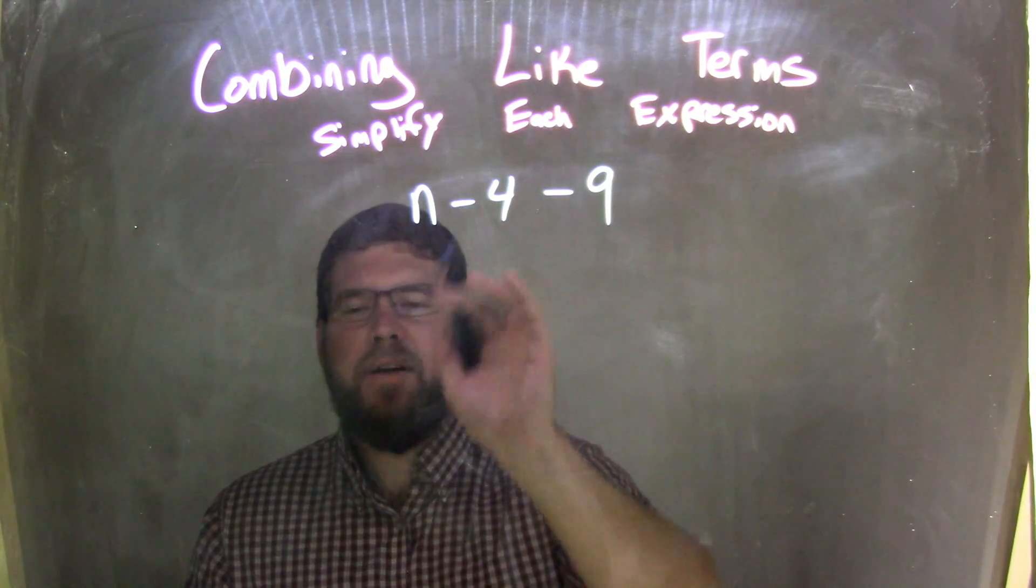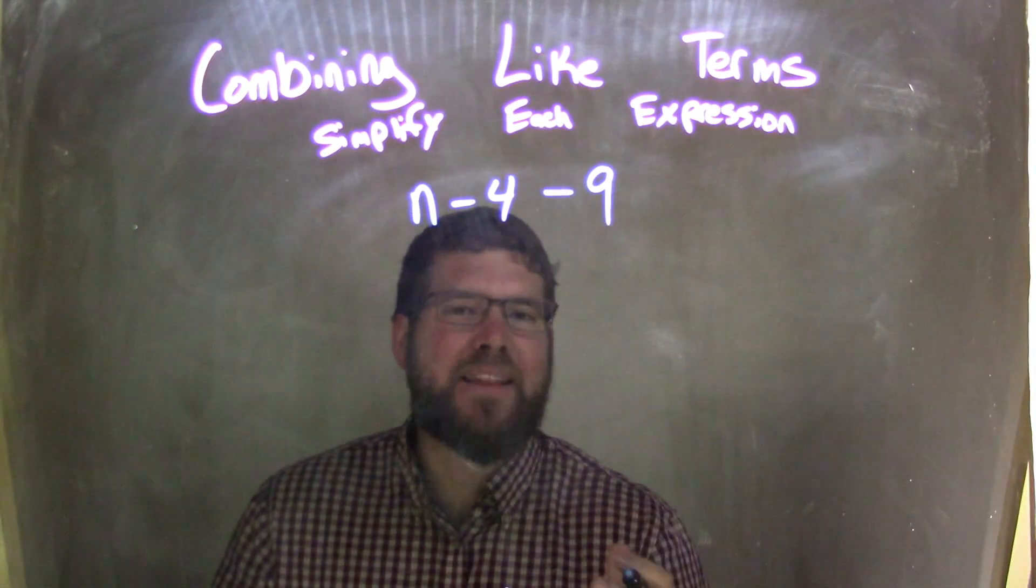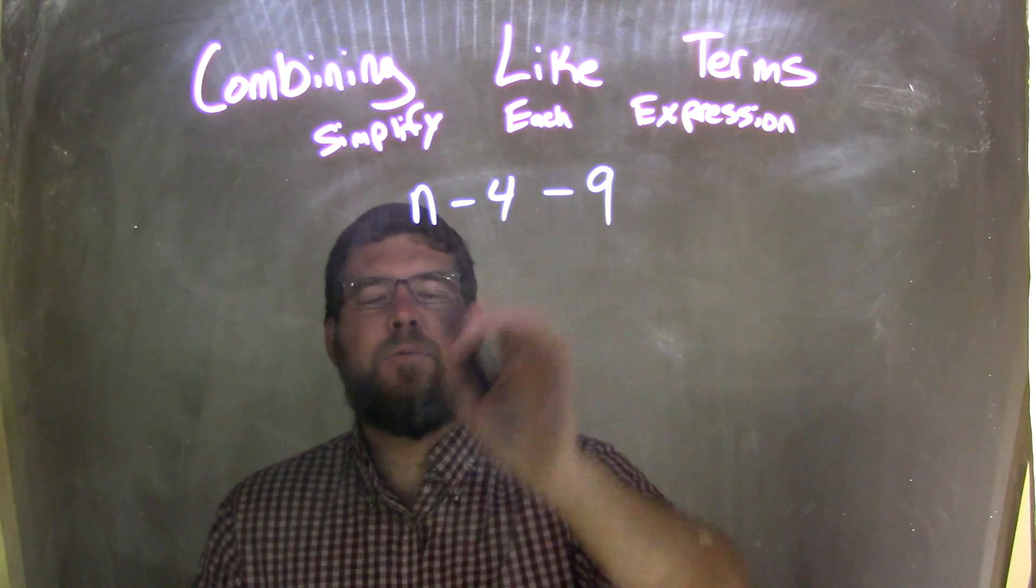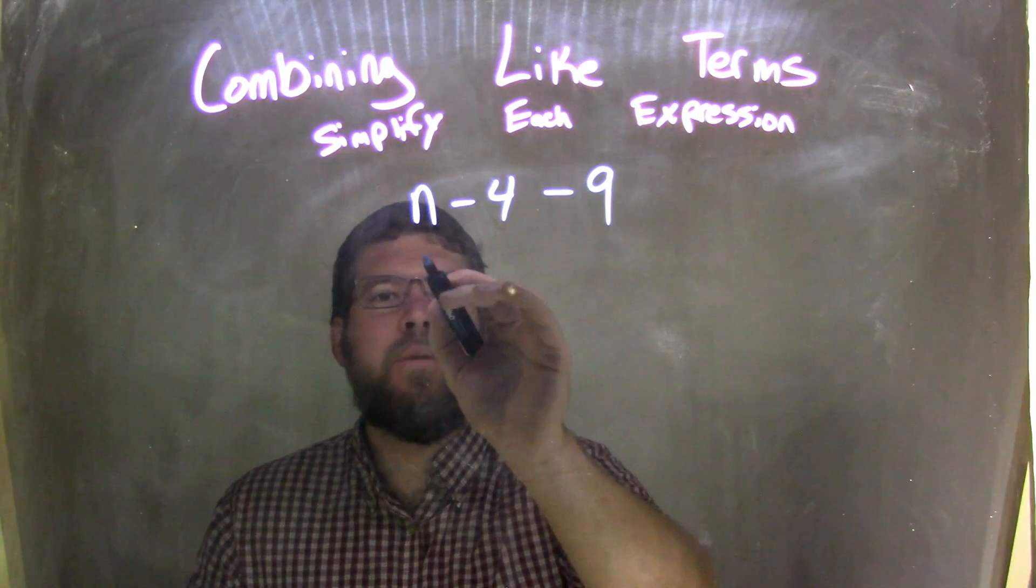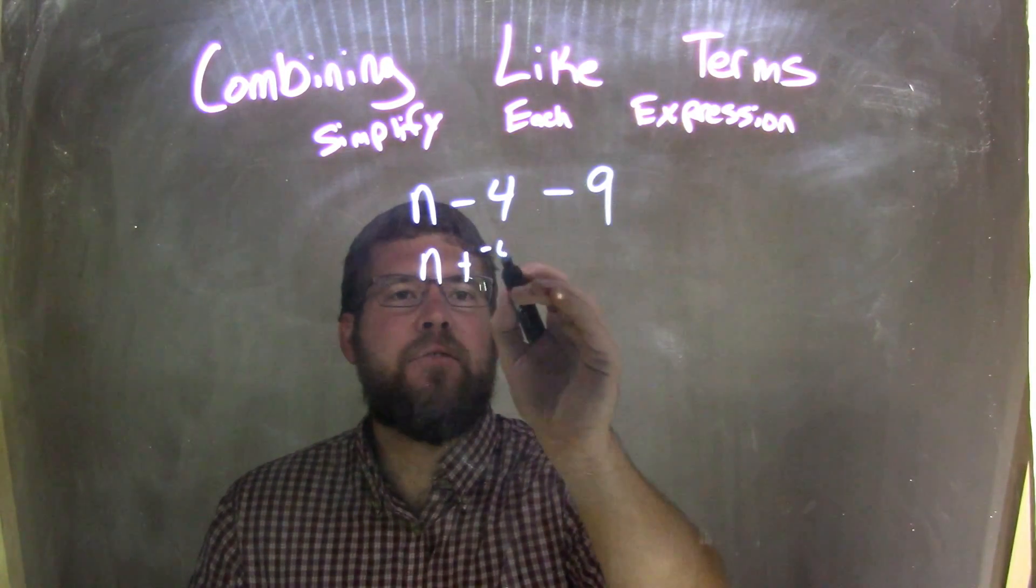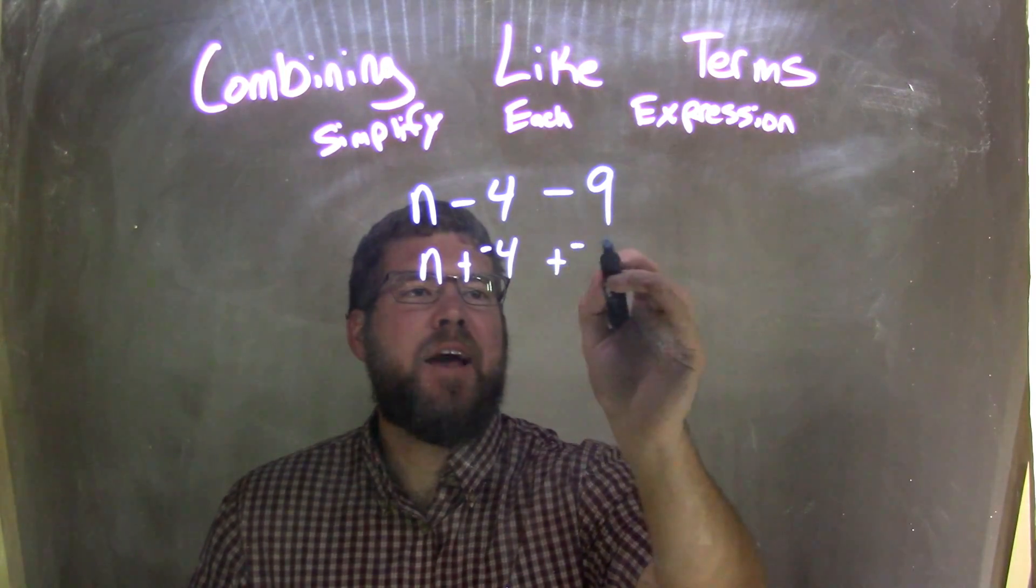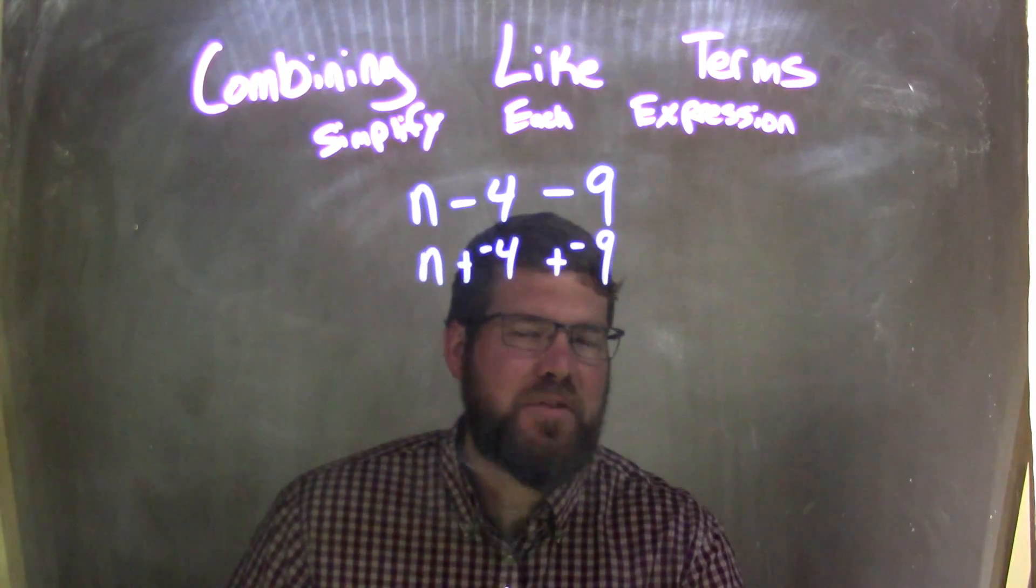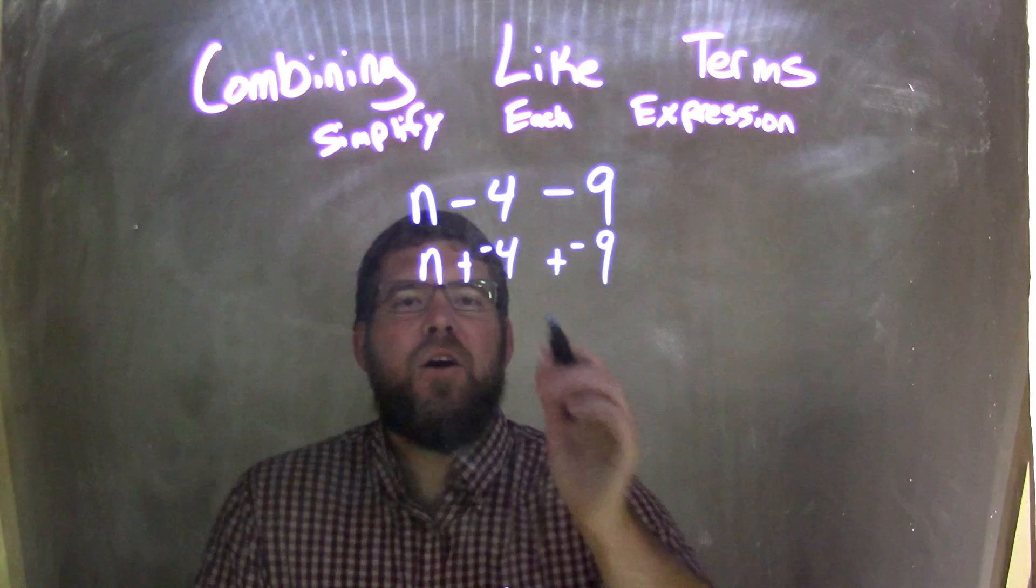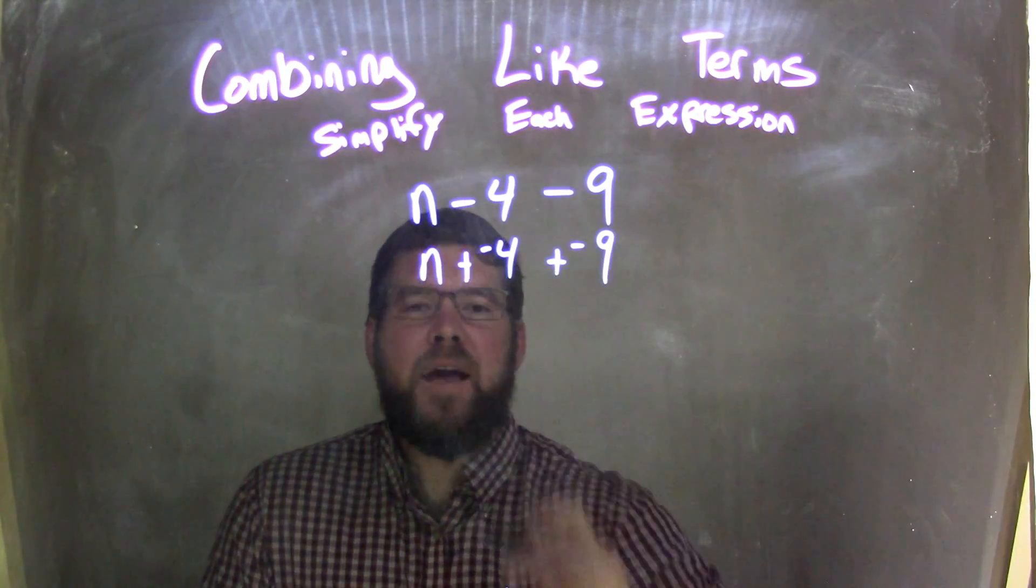I like to combine, again, it helps make sure I don't make this mistake. Make all my subtractions adding a negative. So we have n plus a negative 4 plus a negative 9, and that helps see this more clearly. It's n plus a negative 4 plus a negative 9.